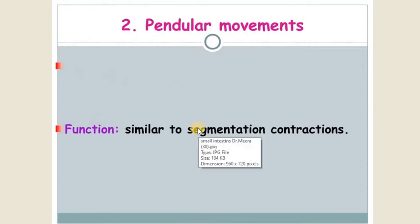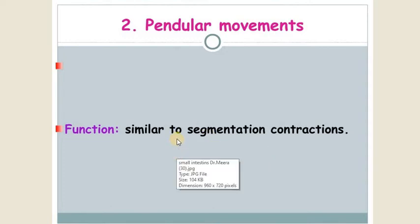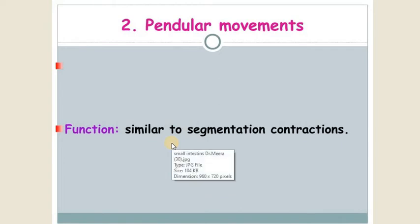The second movement is pendular movement. It is also known as to-and-fro movement. It is a local, stationary movement occurring in a particular segment of intestine, and it is similar to segmentation contraction.